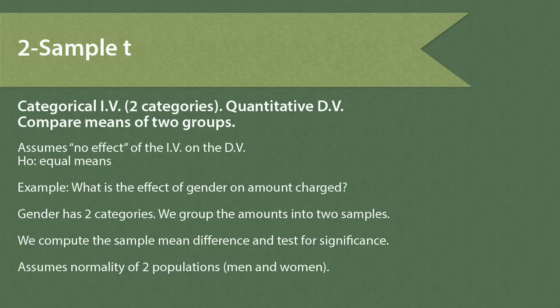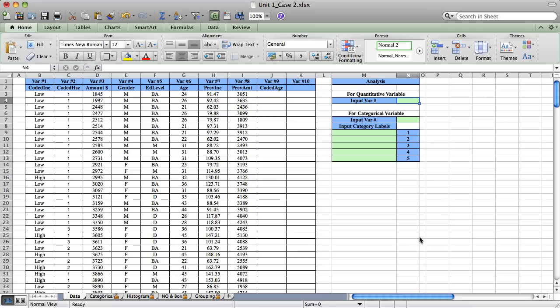Gender has two categories, so we're going to group the amounts into two samples, one for men and one for women. We compute the sample mean difference and test it for significance by comparing it to a test value of zero difference. Like all T procedures, the two-sample T assumes normality, but here we have two independent populations — men and women — and both would need to be checked.